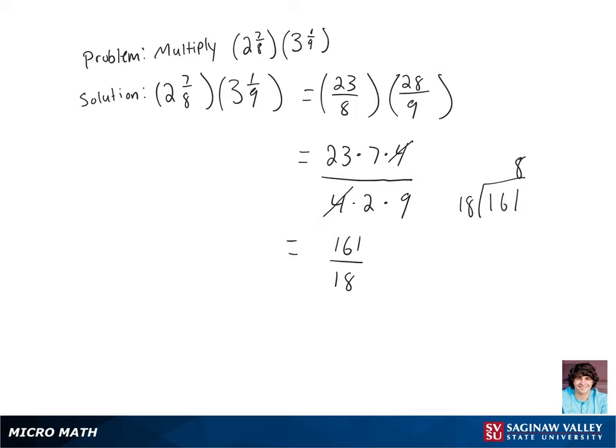18 goes into 161 eight times. 8 times 18 is going to be 144. Subtract that from 161, and we're going to be left with a remainder of 17.